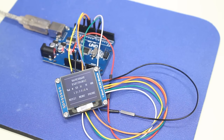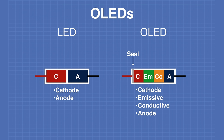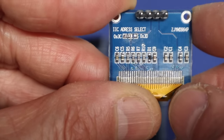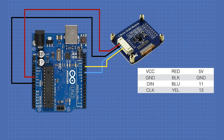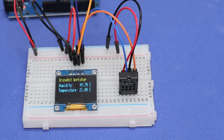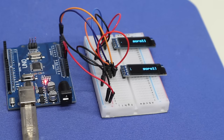Today in the workshop we'll be working with OLED displays. We'll see how we can connect both I2C and SPI displays to an Arduino Uno. We'll even build a temperature and humidity meter. We have a lot on display for you today, so welcome to the workshop.